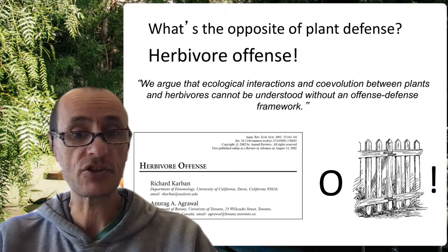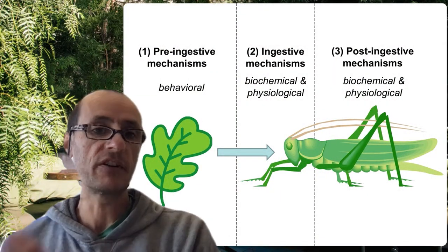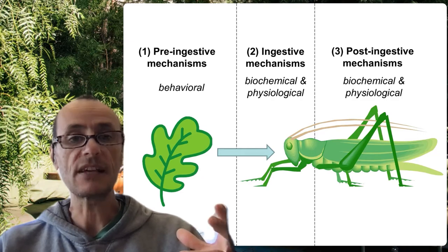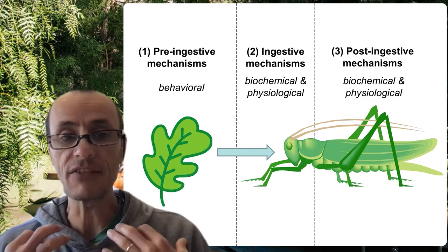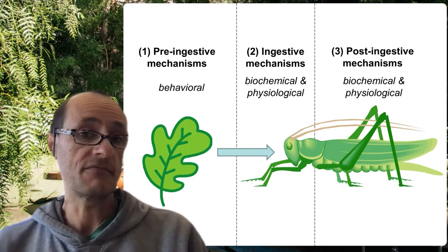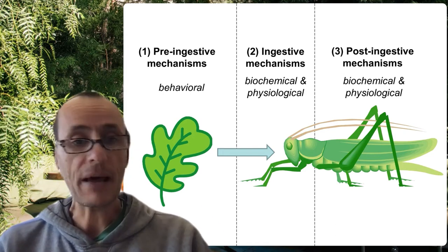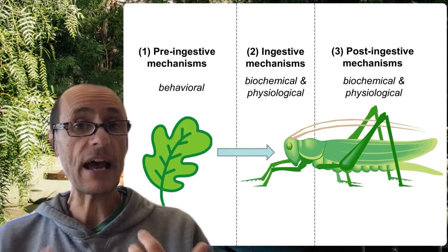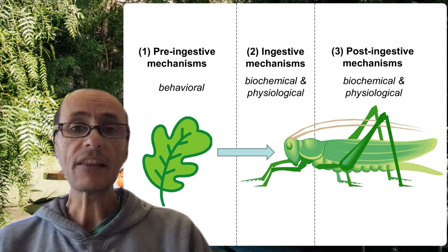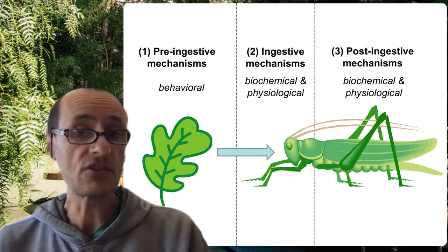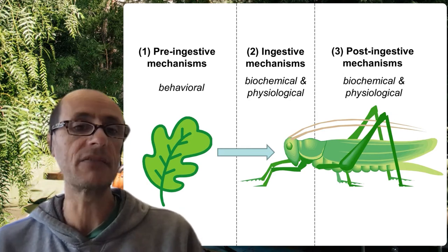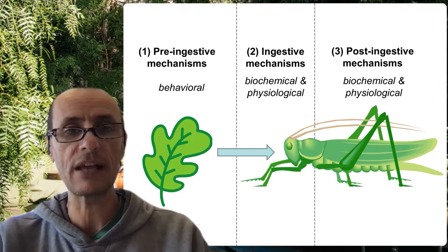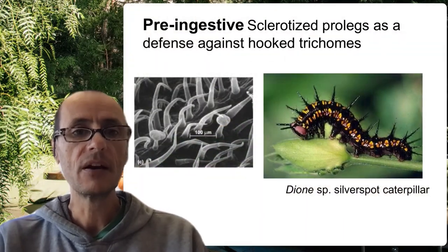How do insects actually deal with this? We can categorize these into three different modes. One is pre-ingestive mechanisms — what can insects do before those chemicals even get into their bodies? The second is ingestive mechanisms — once the plant material has been taken in, what are the biochemical and physiological mechanisms that prevent those chemicals from actually getting into the body? And the last one is post-ingestive mechanisms — it's gotten into the body of the insect, so what are the biochemical and physiological ways insects can prevent damage from actually happening?